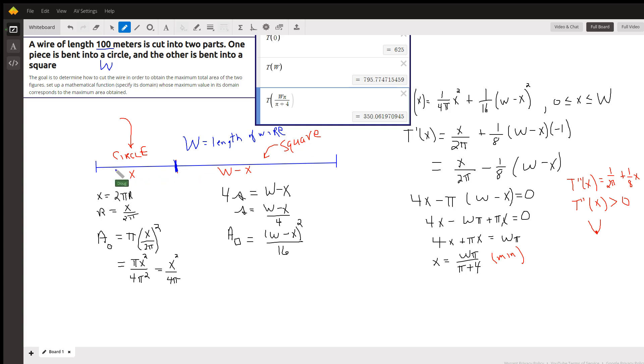And so this distance right here, x, has to be the circumference of the circle. So x has to equal 2π times the radius. I'm doing that so we can find an expression for the radius in terms of x so that we can find a formula for the area of the circle. So r equals x over 2π, so the area of the circle is π times the radius squared, which reduces to x squared over 4π.